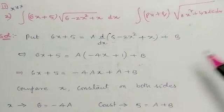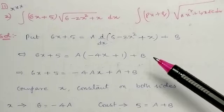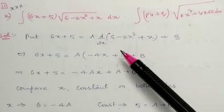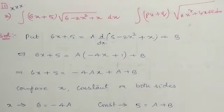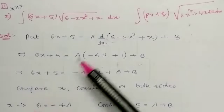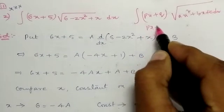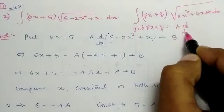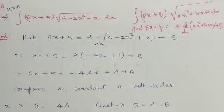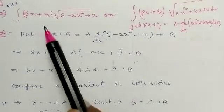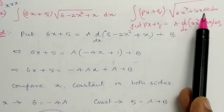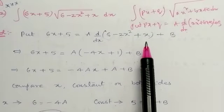In the explanation of Model 1, we follow Model 1 method. So put 6x + 5 equal to A into d/dx of (ax² + bx + c) plus B. What is px + q? It is 6x + 5. So, 6x + 5 equal to A into d/dx of the quadratic inside the root, which is (6 - 2x² + x), plus B.